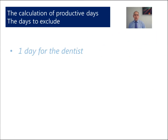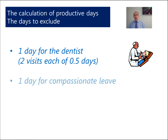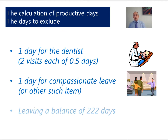Next, we also have to take into account some other items. We want our team to be healthy — they will probably go to the dentist twice a year, so that will exclude 2 half days. And it may be that we have to take into account other items, perhaps some compassionate leave, so let us allow an additional day for that. This gives us a balance of 222 days that they are available.